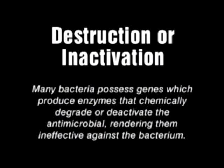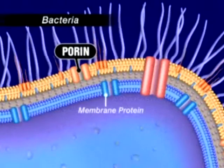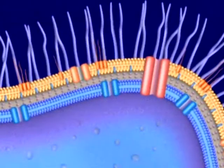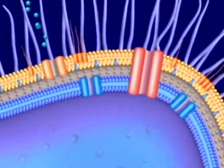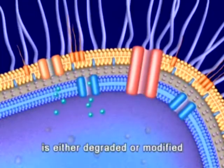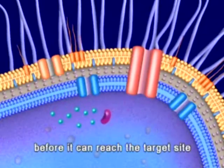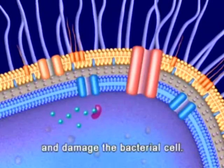Destruction or inactivation. Many bacteria possess genes which produce enzymes that chemically degrade or deactivate the antimicrobial, rendering them ineffective against the bacterium. The antimicrobial is either degraded or modified by enzymatic activity before it can reach the target site and damage the bacterial cell.